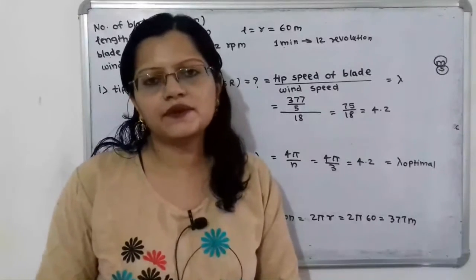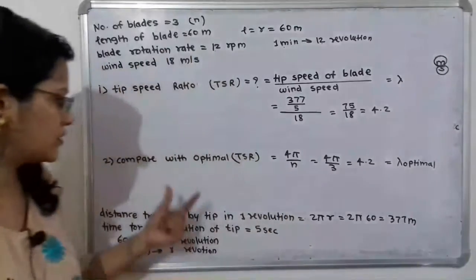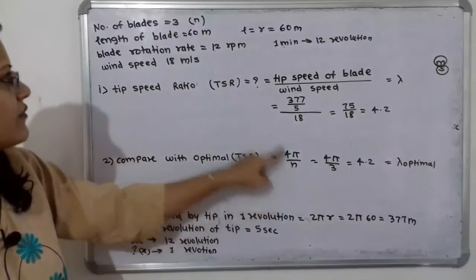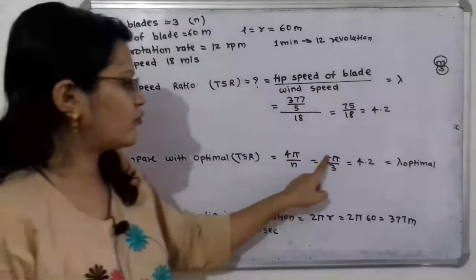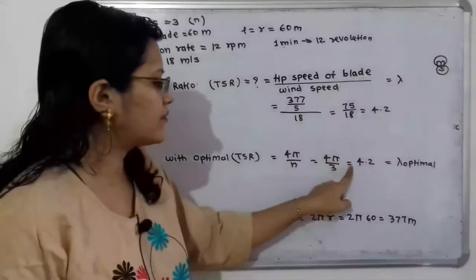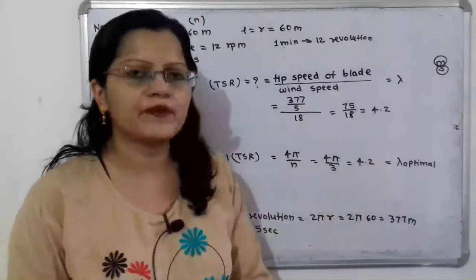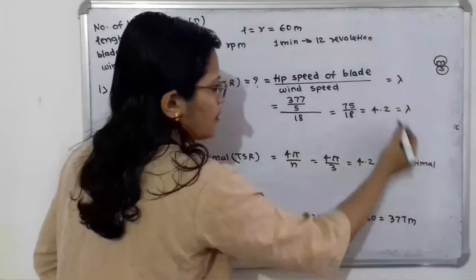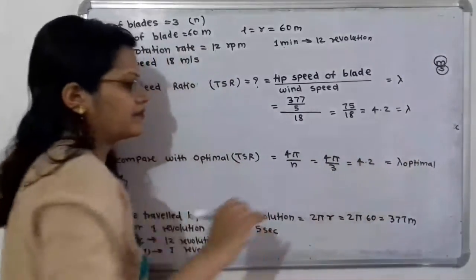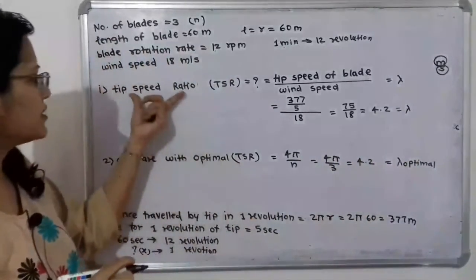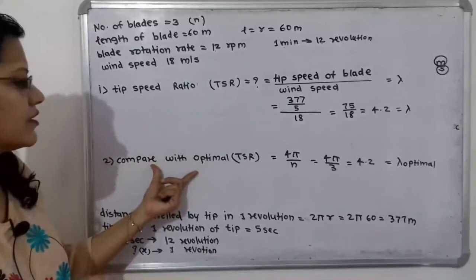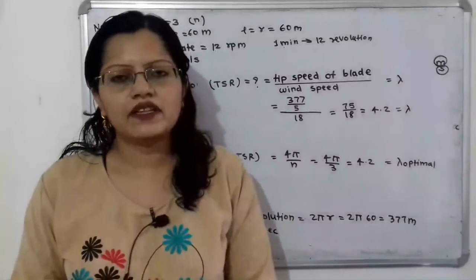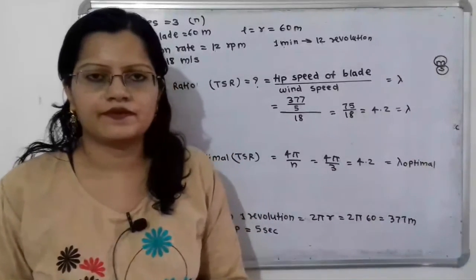Now we compare this with the optimal tip speed ratio, which is the tip speed ratio for maximum power. The formula is λ_optimal = 4π / n, where n is the number of blades. So λ_optimal = 4π / 3 ≈ 4.3. Comparing, λ ≈ 4.2 and λ_optimal ≈ 4.3, which are approximately equal, so the turbine is operating at very close to its optimal tip speed ratio.